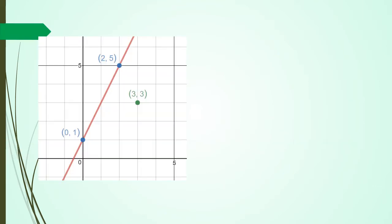Alright, so basically I've got this red line. What I would like to do is create a line that is parallel to the red line and it's going to go through point (3, 3). So basically I'm looking for an equation of a line that's going to go through this. The first thing I've got to do is work out the gradient of the red line.